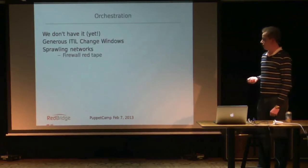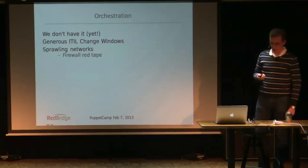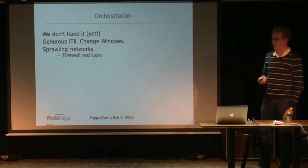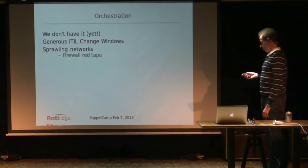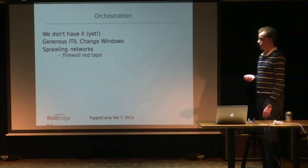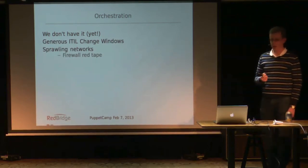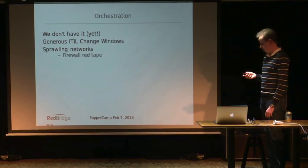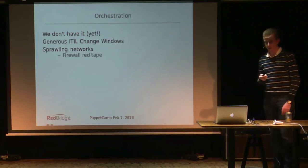Orchestration — we don't have it. The biggest reason is that we have such large change windows. We can say 'sometime during the next weekend there will be a change' — so why would you need to specify exactly what second the change happens? Also in this organization, even within the same sites, the complicated network, firewalls, and security requirements mean a lot of red tape to open a port somewhere, which makes having Puppet run at all a little difficult. Imagine reaching all your servers on a port — they'd have to open around a hundred firewalls.